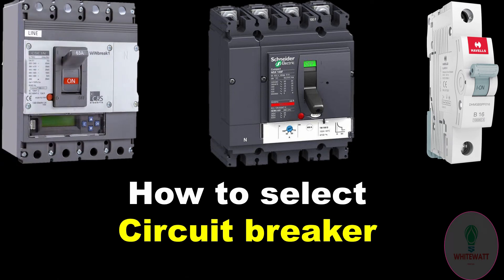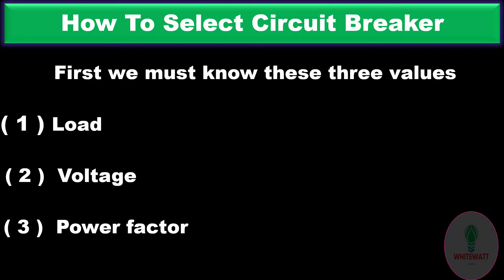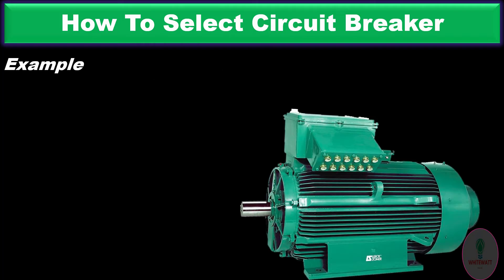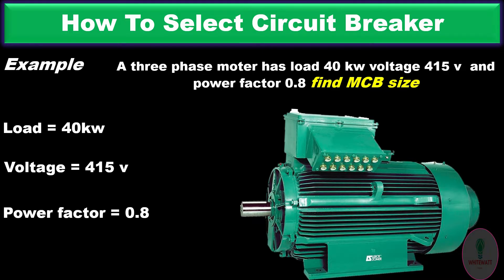Hello guys, welcome to my YouTube channel. Today our topic is how to select breaker size. First, we must know three values: number one, load; number two, voltage; number three, power factor. For example, we have a three-phase motor whose load is 40 kilowatt, voltage is 415 volt, and power factor is 0.8.